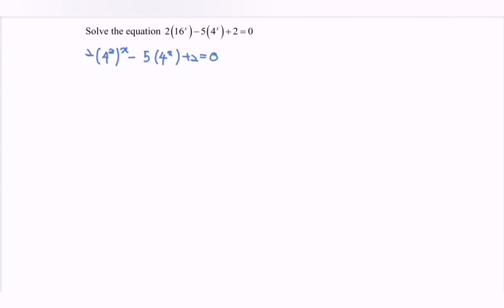So notice that we have the common terms. Let y equal 4 to the power of x. So we have 2y squared minus 5y plus 2 equals 0.